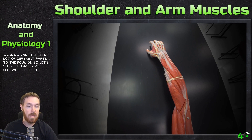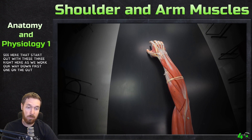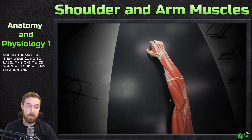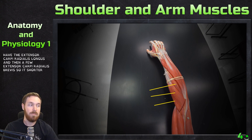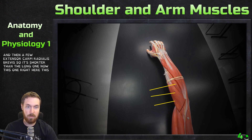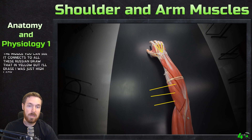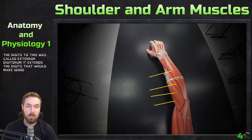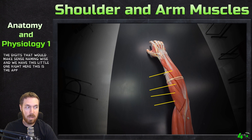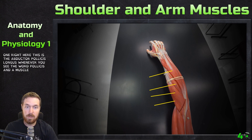Let's start with these three on the outside as we work our way down. We're going to label this first one twice — in this position and then when we flip the arm over. Right here is the brachioradialis; right inside that we have the extensor carpi radialis longus, and then the extensor carpi radialis brevis — shorter than the long one. This big one coming down the middle attaches to all the digits, so it's called the extensor digitorum — it extends the digits, which makes sense naming-wise.